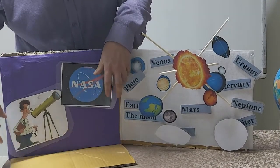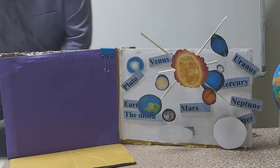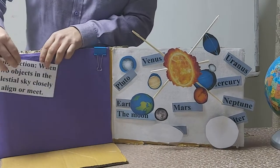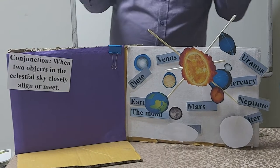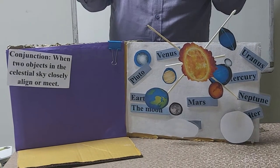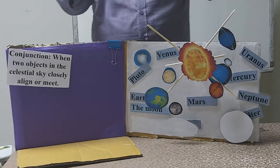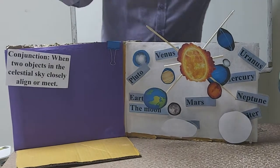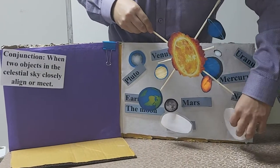And what happens is this great conjunction happens. What is a conjunction? Okay, well a conjunction is when two objects in the celestial sky or space, when they meet or align, this is what happened very recently.